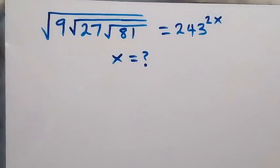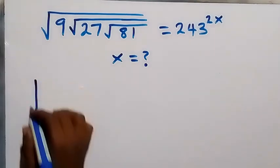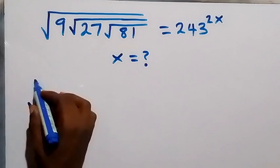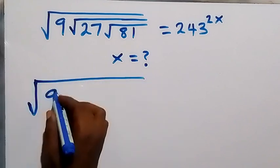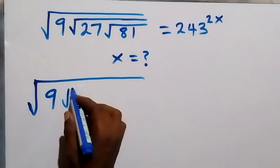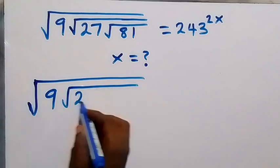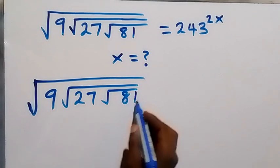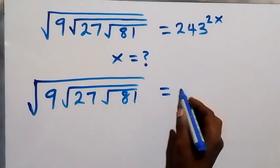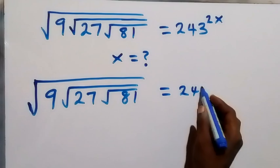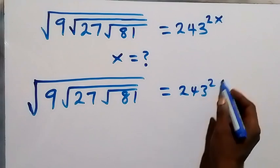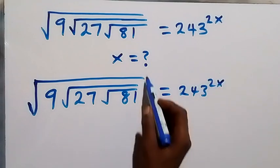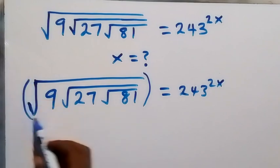Hello, you are welcome here. Let's solve this nice algebra equation involving roots. We have the square root of 9, and inside that we have the square root of 27 and also the square root of 81, which equals 243 raised to the power 2x. Now let's square both sides.